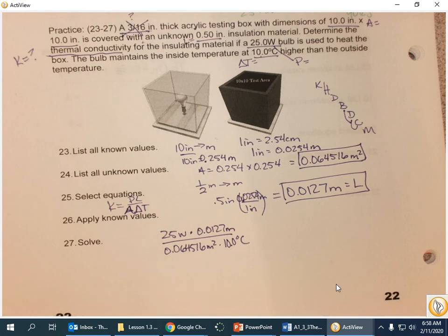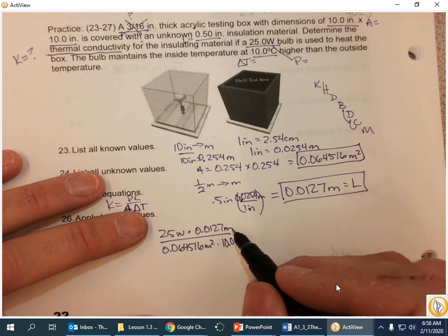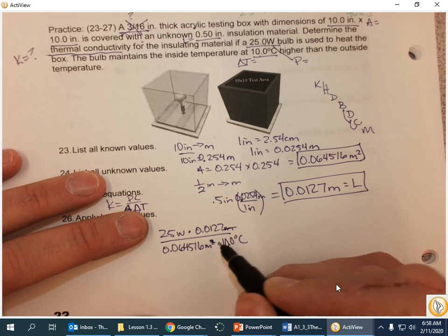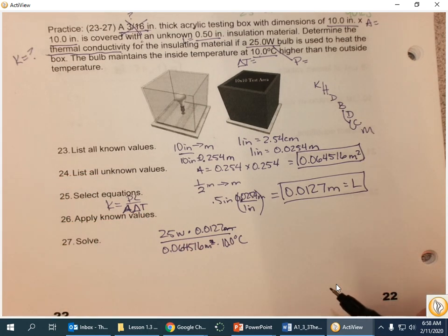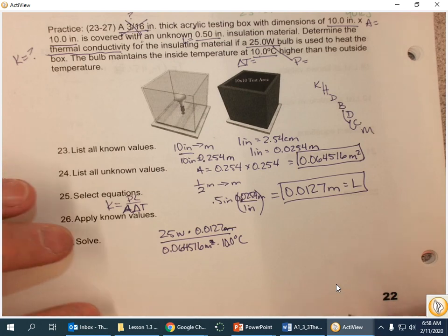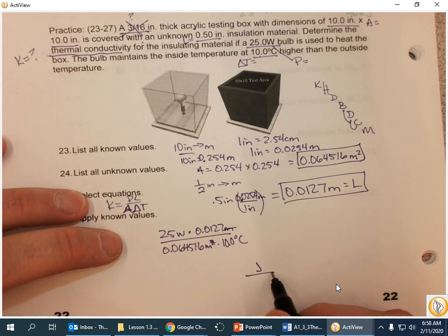What is my answer going to be in? Well, that meter is going to cancel with one of those. So, a watt is a joule per second. So, my answer is going to be joules per second meter degrees Celsius.